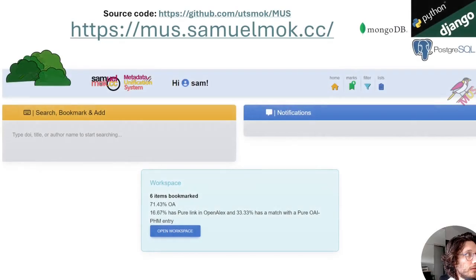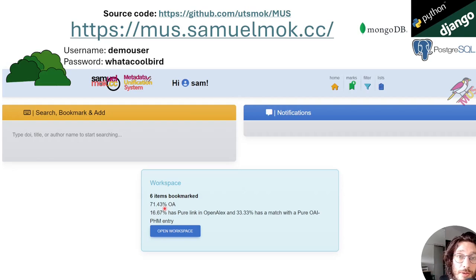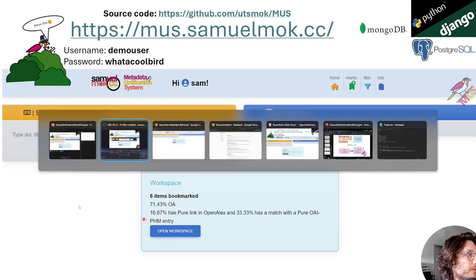And it runs on a server. You can access it at mus.samuelmok.cc. The source code is openly available on my GitHub. And for this presentation, I have added a username and password for a demo user. So, feel free to check it out. Let's quickly show you how it then works in practice. So, here you can see the live version.